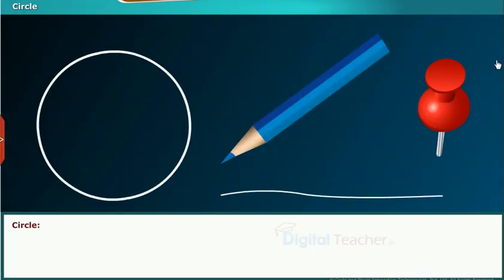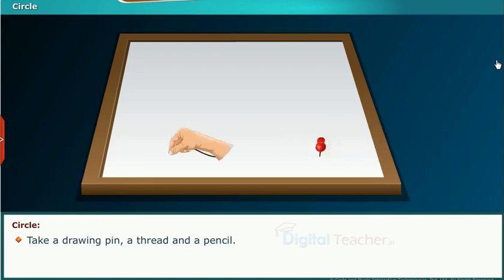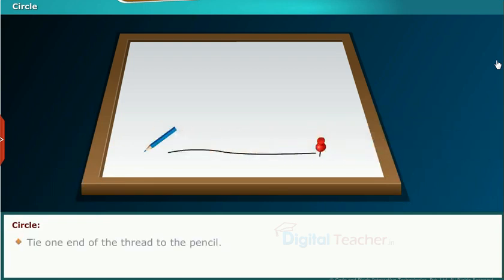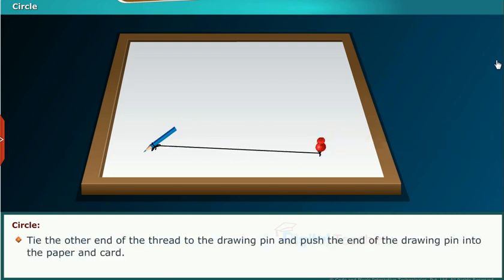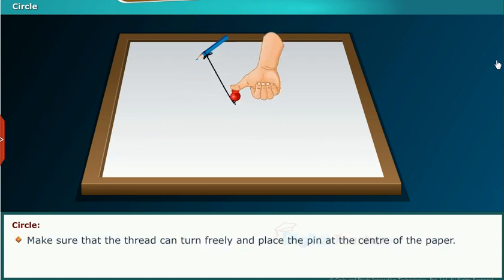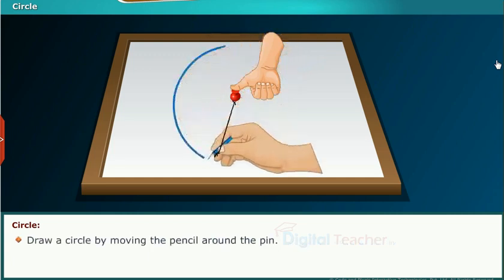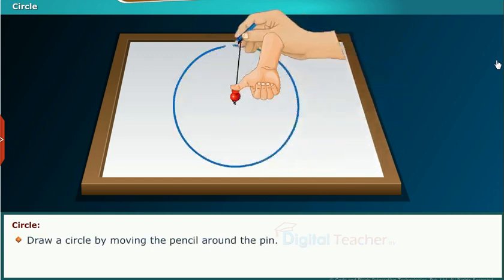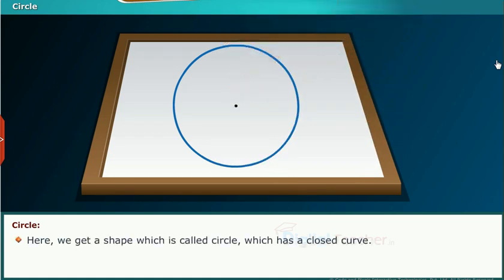Now let us draw a circle with the help of thread and pencil. Place a paper over a cardboard. Take a drawing pin, a thread and a pencil. Tie one end of the thread to the pencil. Tie the other end of the thread to the drawing pin and push the end of the drawing pin into the paper and cardboard. Make sure that the thread can turn freely and place the pin at the center of the paper. Draw a circle by moving the pencil around the pin. Here we get a shape which is called a circle, which has a closed curve.